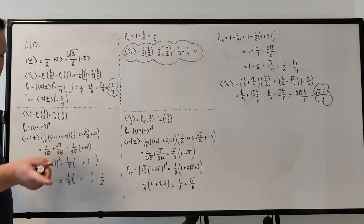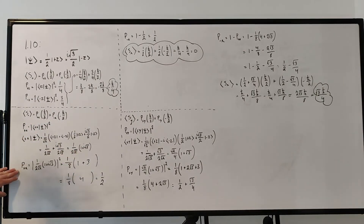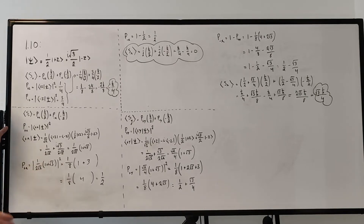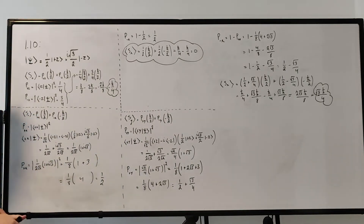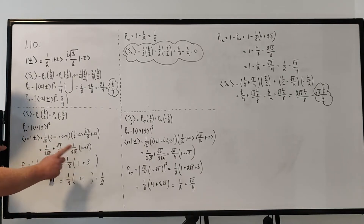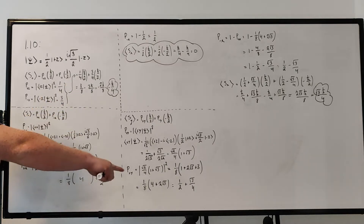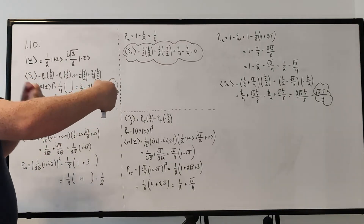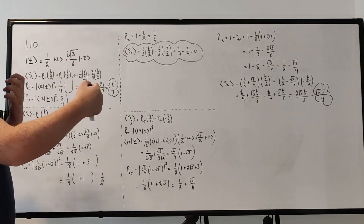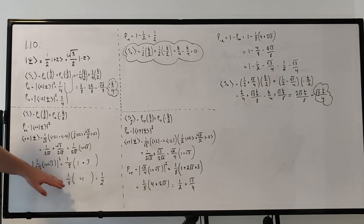You can also write 1/(2√2) as √2/4. Taking the magnitude squared of that inner product: |1/(2√2)|² = 1/8. Then |1 + i√3|² = (1 + i√3)(1 − i√3): the i√3 and −i√3 terms cancel to give 0, and i√3 times −i√3 gives +1 · 3 = 3. So we get 1 plus 3 = 4. Multiplying 1/8 times 4 gives 1/2. So the probability of +x is 1/2.